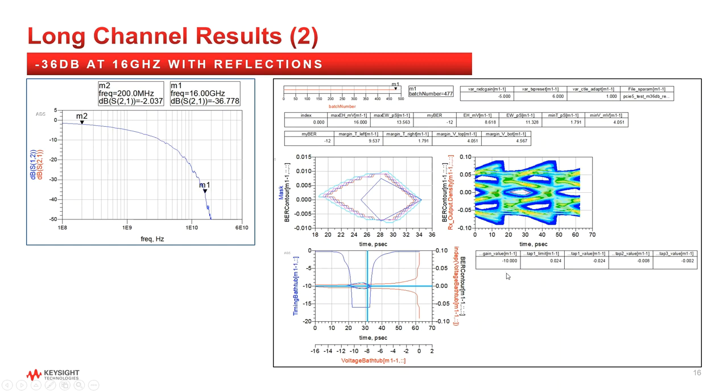The CTLE value is actually weaker in this case with a DC gain of minus 10, but a Gen 5 passing eye opening of 16 millivolts and 13.5 picoseconds.